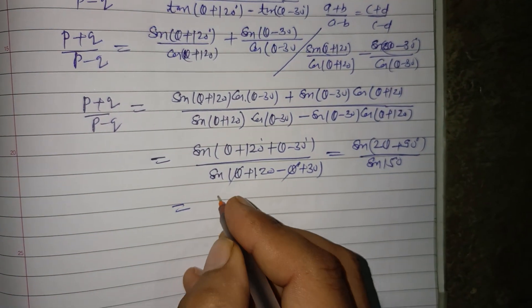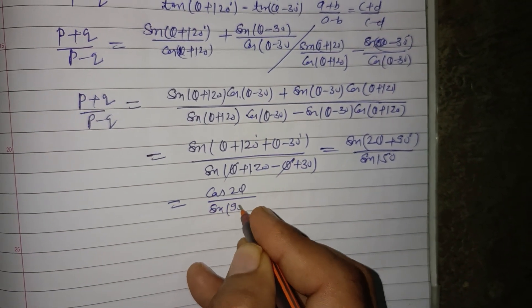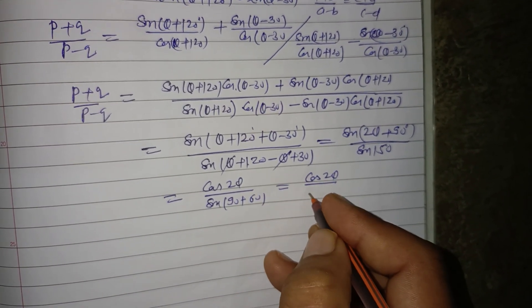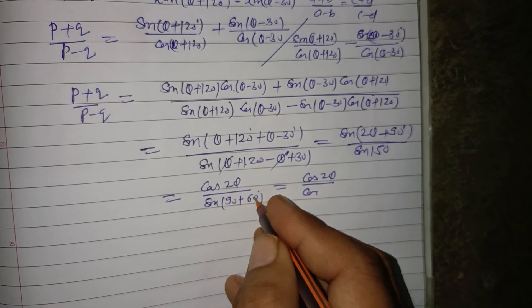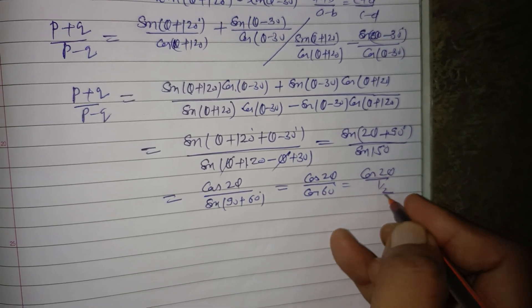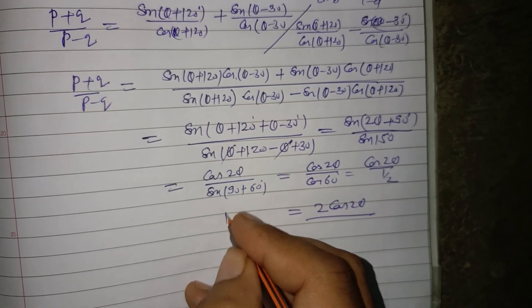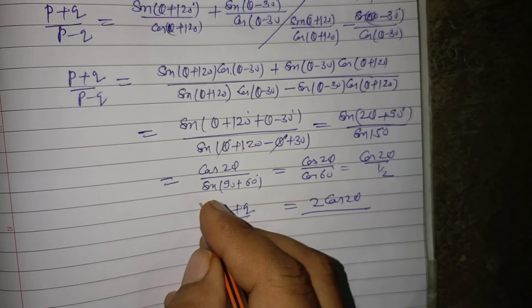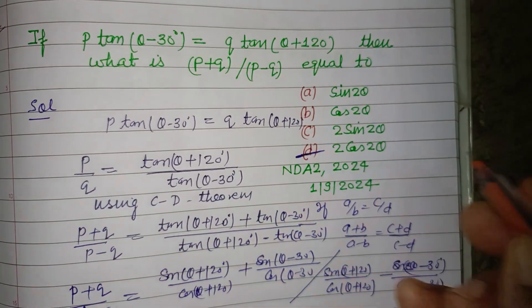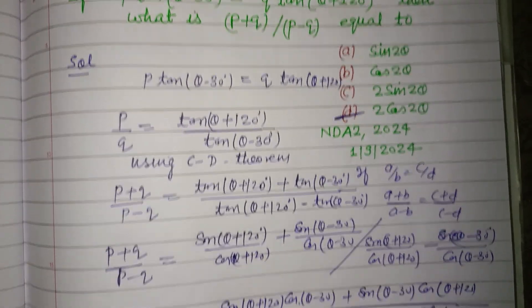Now, sin(2θ+90) = cos(2θ). For the denominator, sin(150) = sin(90+60) = cos(60) = 1/2. Therefore, (p+q)/(p-q) = cos(2θ) / (1/2) = 2cos(2θ). The final answer is 2cos(2θ), which corresponds to Option D. Option D is correct. I hope you got it — please like the video, subscribe to the channel, thanks for watching.